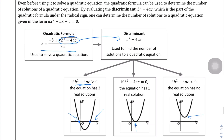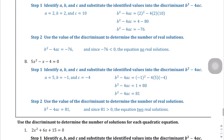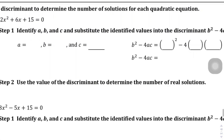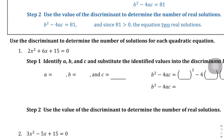In this first part we're identifying the number of solutions given the discriminant. Here's the first problem: 2x squared plus 6x plus 15. The first term gives us a equals 2, attached to x squared. b equals 6, attached to the variable with one degree. And c equals 15, the constant with no variable. So a, b, and c are 2, 6, and 15 respectively.